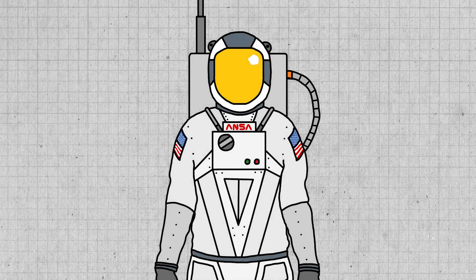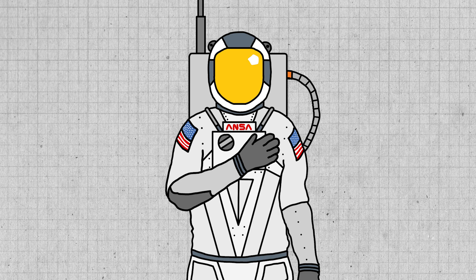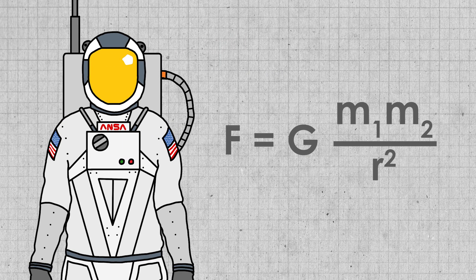All objects, big and small, are attracted to each other by the force of gravity. This force increases with mass and decreases with distance, as shown in this equation created by Isaac Newton.